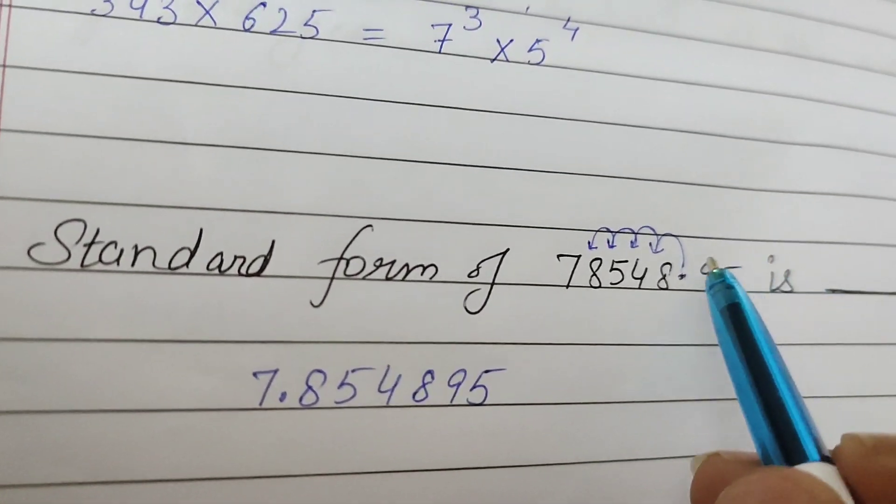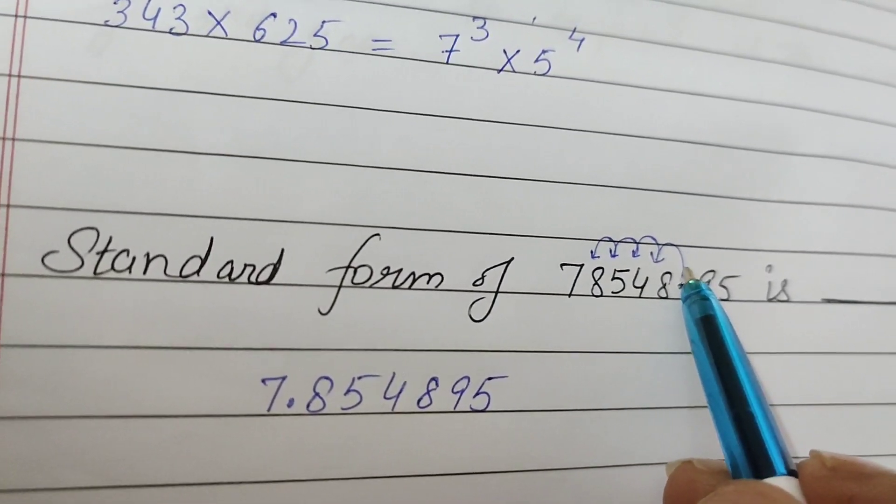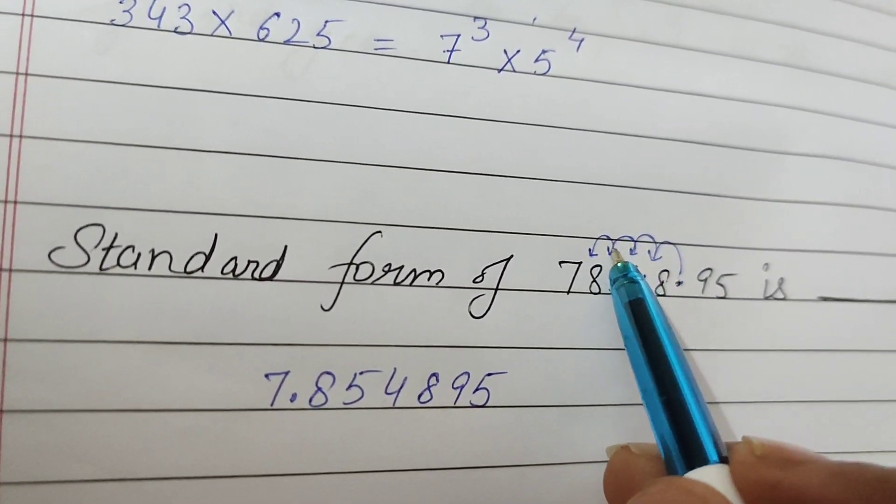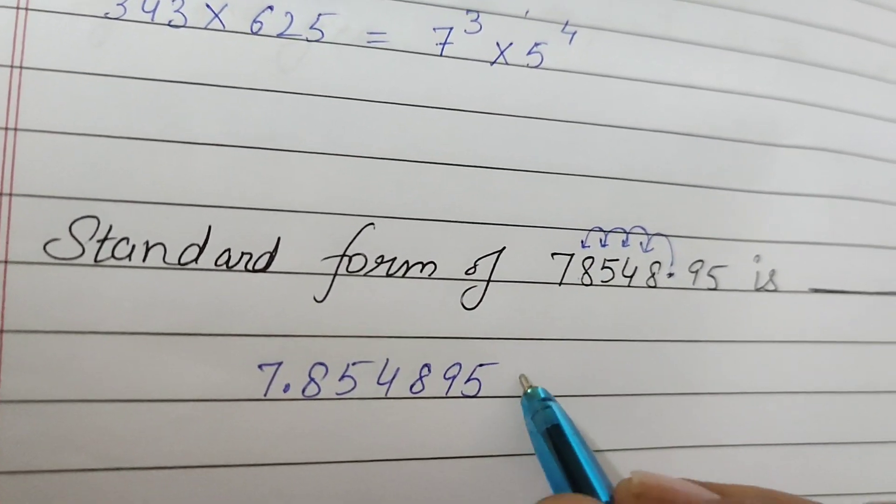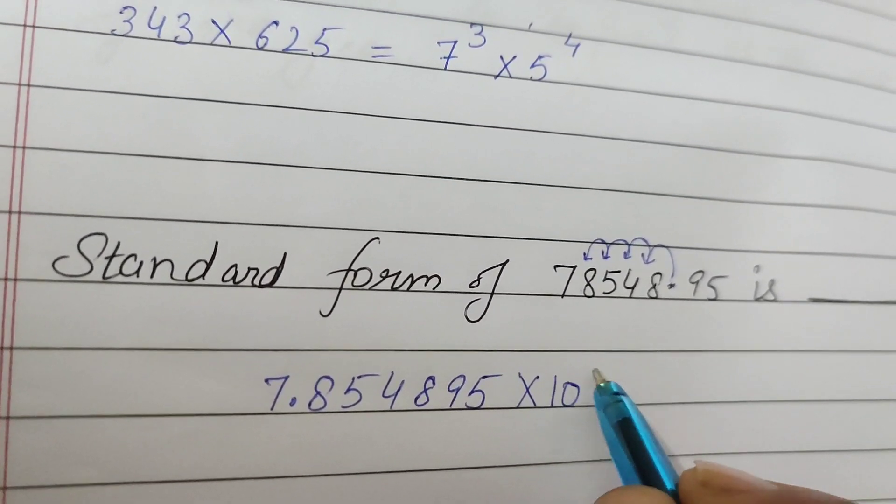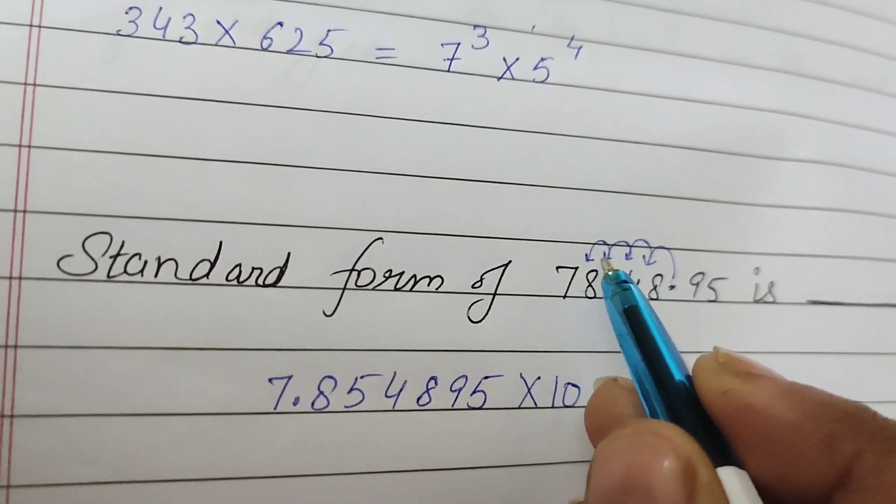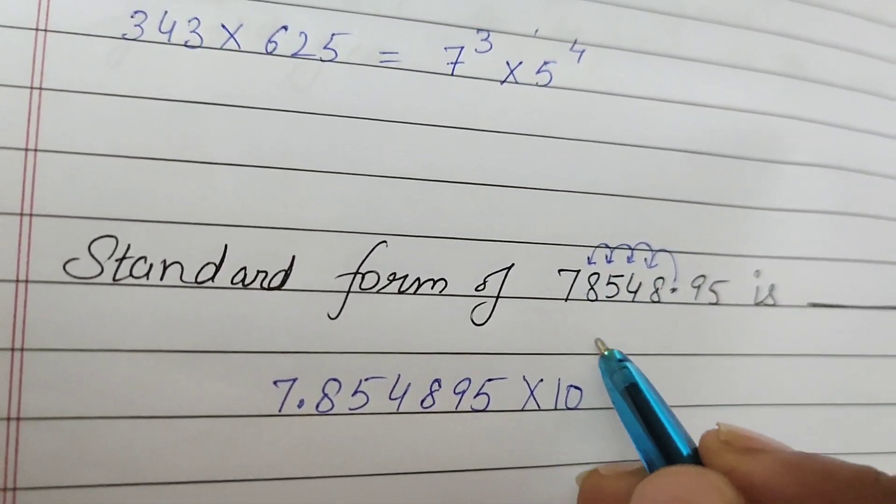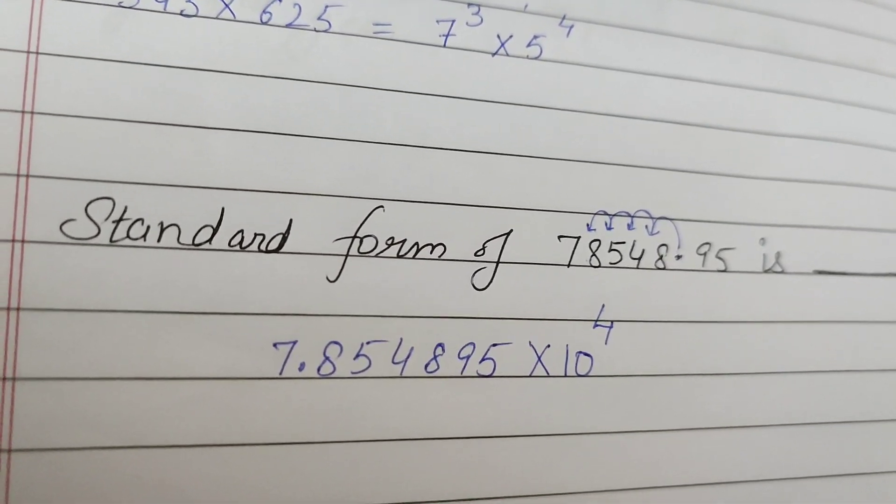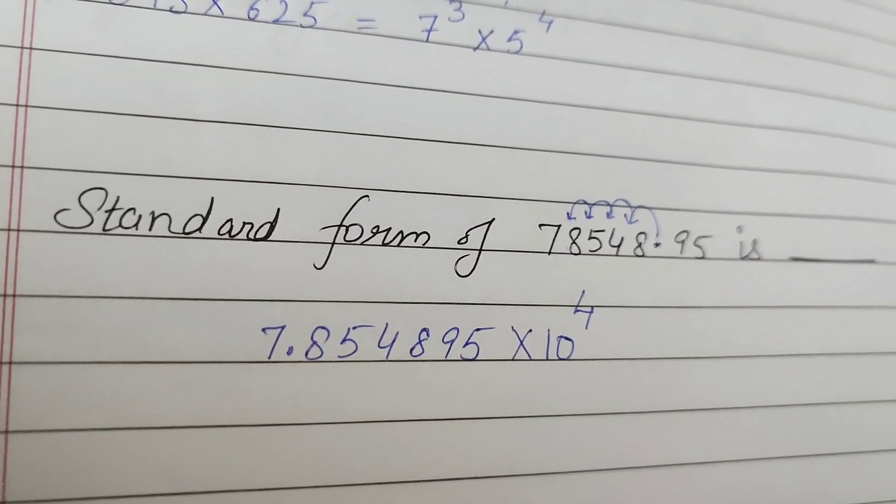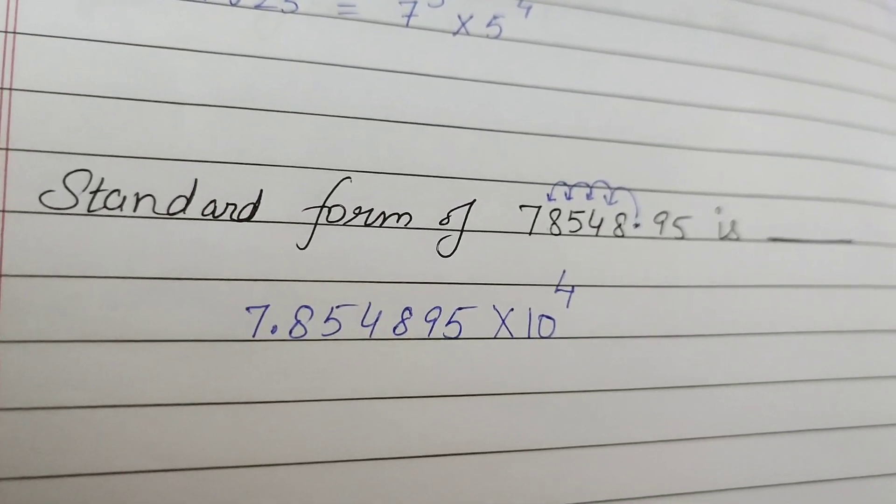We move the decimal to the left side kitni baar, 1, 2, 3, 4. Yahan pe stop, 7 point aega. Jitni baar move kiya hai, utni hi 10 ki power lag jayegi. 1, 2, 3, 4. Char baar move kiya, so it will be 10 raise to power 4. This will be the easiest one to find out the standard form.